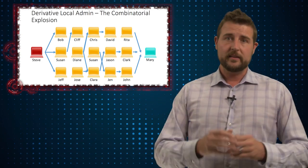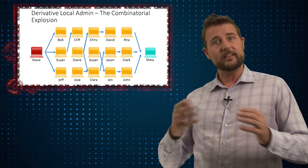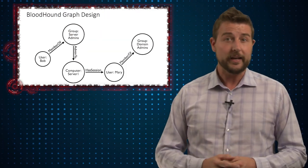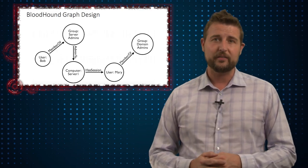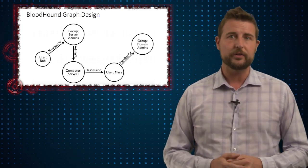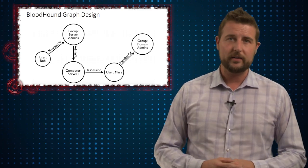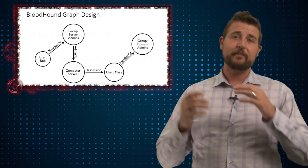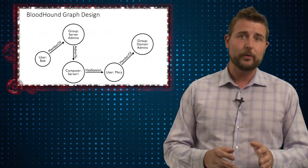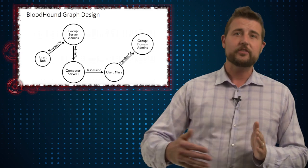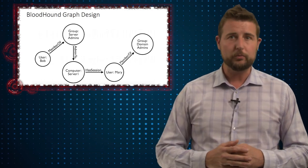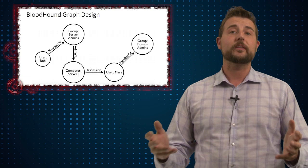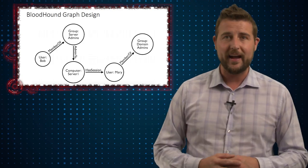The meat of this presentation was that these pen testers used something called graphing theory and a tool called PowerView to automate this process. They have a PowerView command that you can use to gain data and start the network enumeration process to figure out all the different user accounts out there that you might have access to.